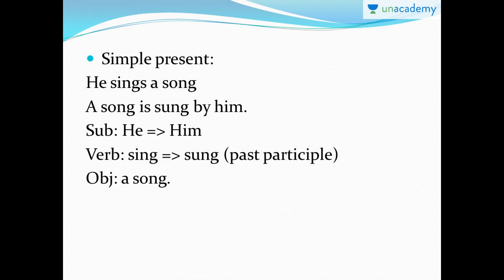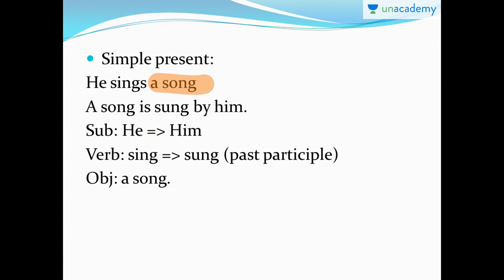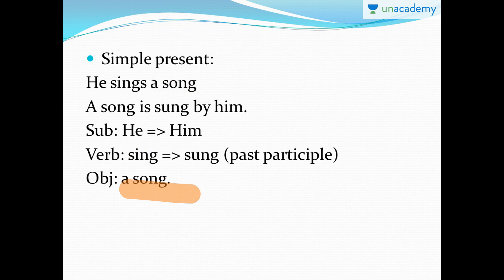A few more examples in simple present tense: 'He sings a song' becomes 'A song is sung by him.' A song is singular, so we use 'is sung by him.' Subject 'he' changes to 'him.' In passive voice, the subject moves to the end and the object moves to the beginning. The verb 'sing' in past participle form becomes 'sung', and the object 'a song' remains the same.